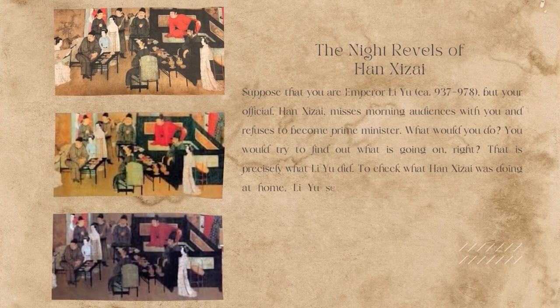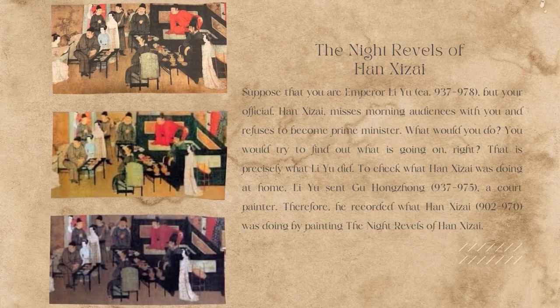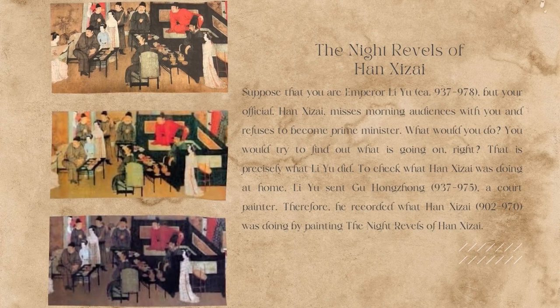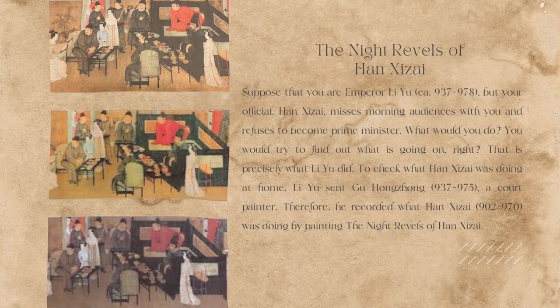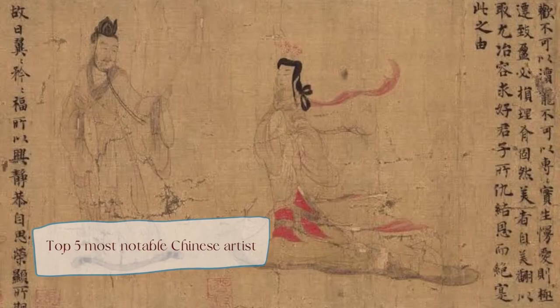The fifth is the Night Revels of Han Xizai. Suppose you are Emperor Li Yu, but your official Han Xizai misses meetings with you and refuses to become your prime minister — what would you do? You would try to find out what is going on. That is precisely what Li Yu did. To check what Han Xizai was doing at home, Li Yu sent Gu Hongzhong, a court painter, who recorded Han Xizai's activities by painting the Night Revels of Han Xizai.